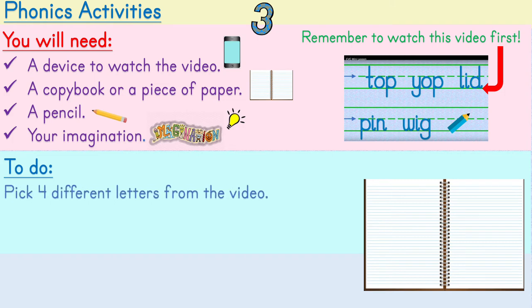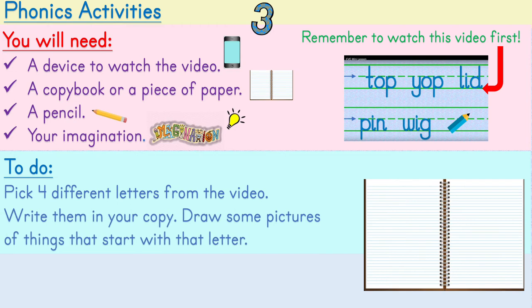What you need to do: Pick four different letters from the video, so four different letters from the last time. Write them in your copy. Draw some pictures of things that start with that letter.